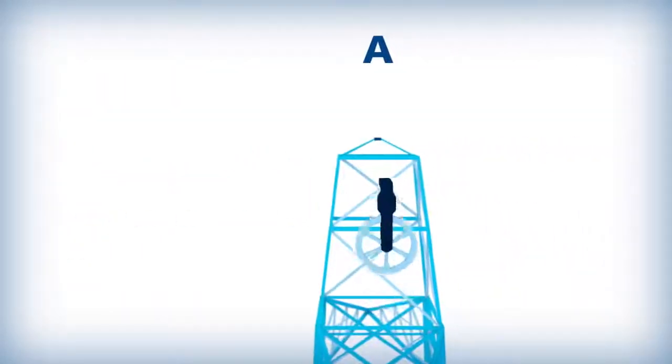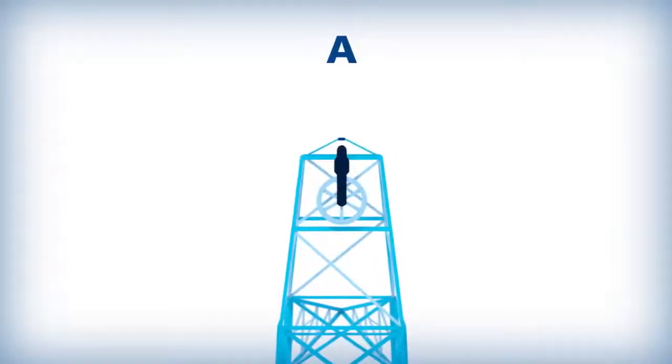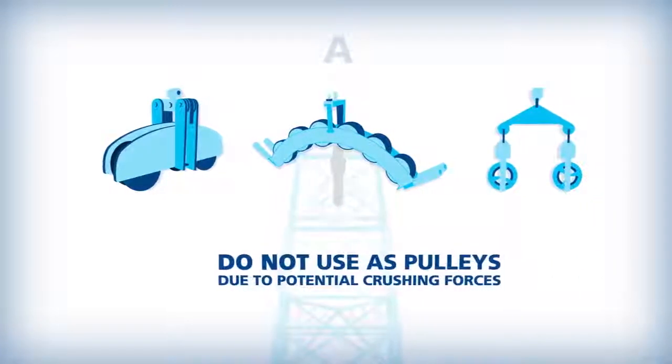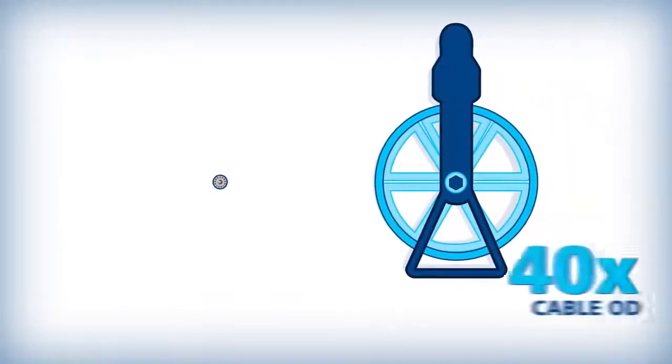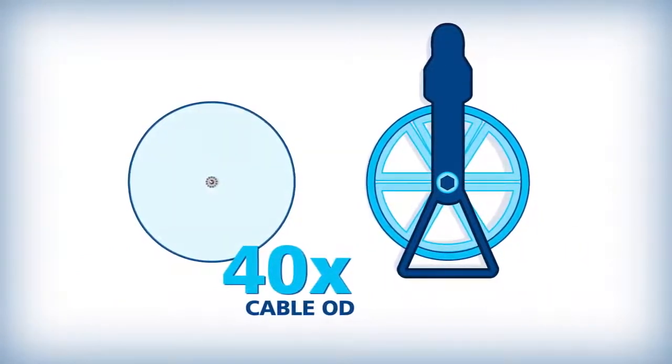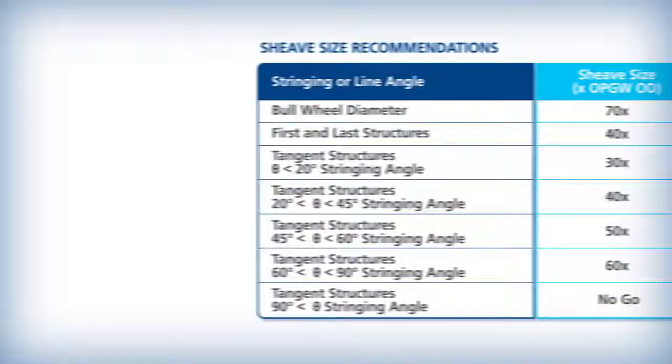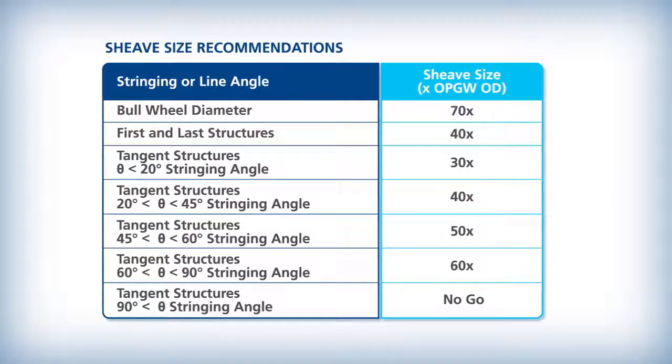Stringing blocks, or travelers, are mounted on the tower at the OPGW attachment point. Radius blocks, banana blocks, and array travelers should not be used as pulleys due to potential crushing forces. AFL recommends a pulley with a diameter of 40 times the cable outer diameter at the first and last structures. Straight pulls can use a pulley with a diameter of 30 times the cable outer diameter.